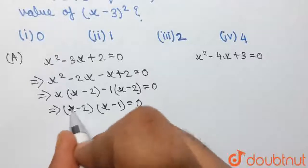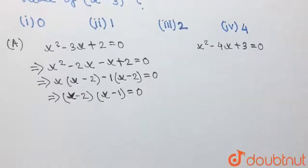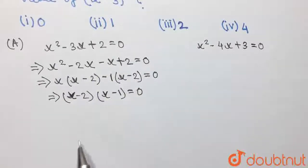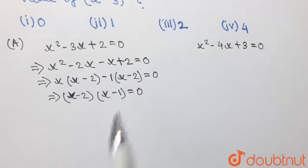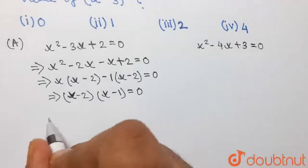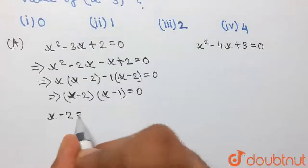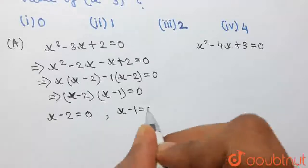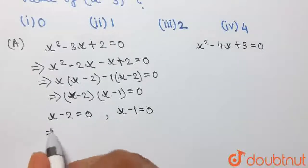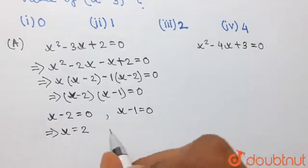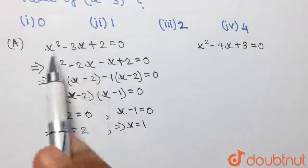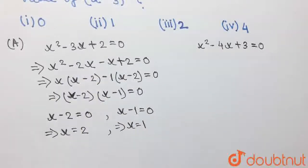Taking (x-2) common, we have (x-2)(x-1)=0. The two values of x from this quadratic equation will be obtained by equating each factor to 0: x-2=0 and x-1=0. So the two values of x from the first equation are x=2 and x=1.